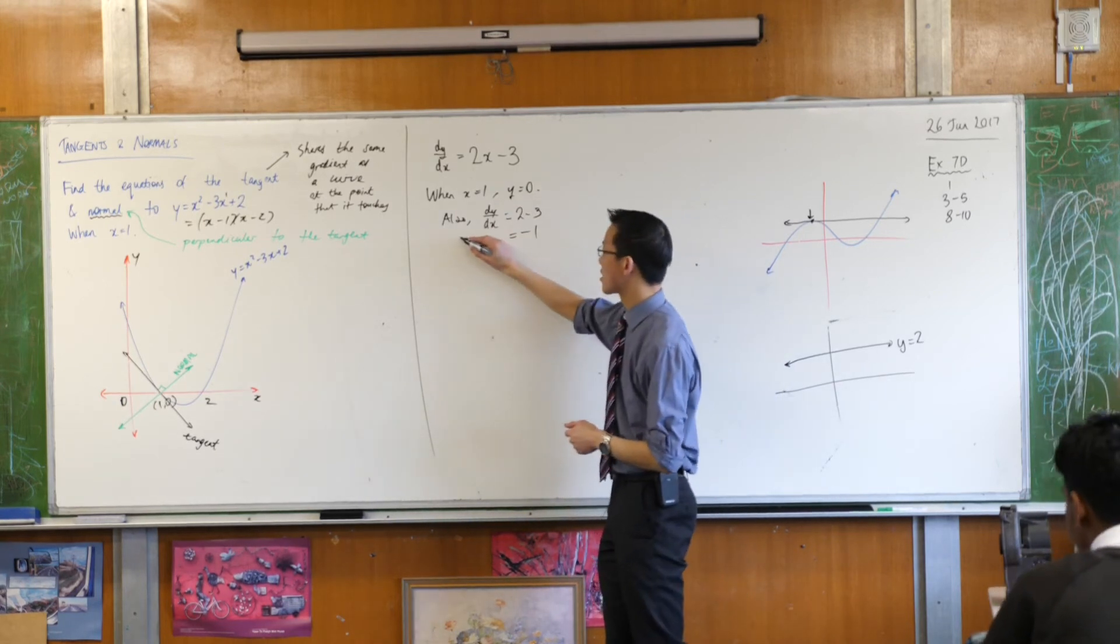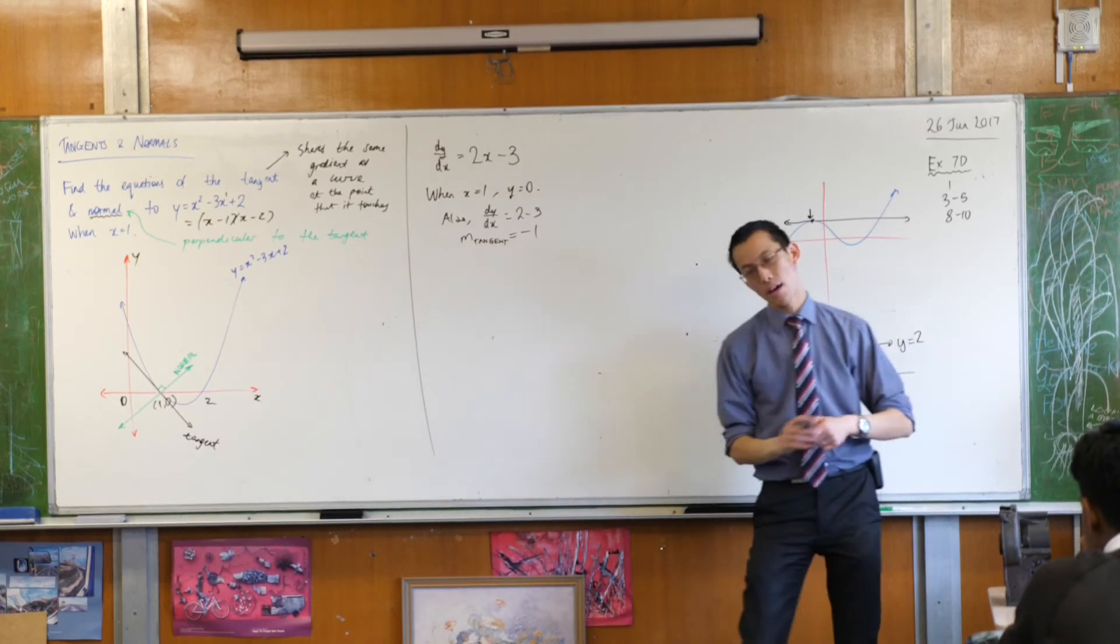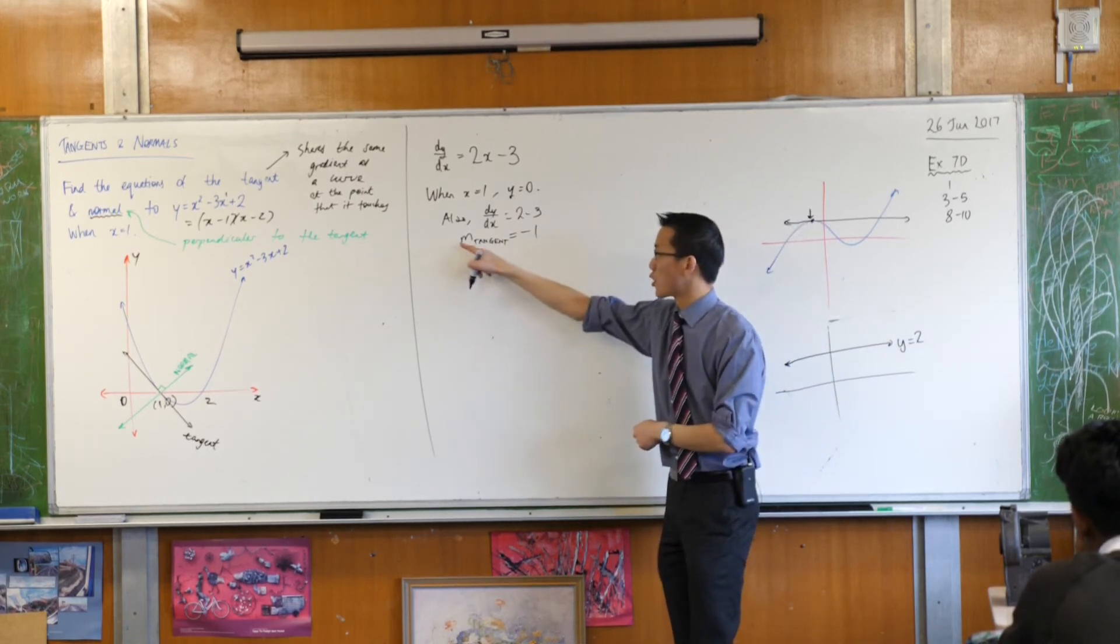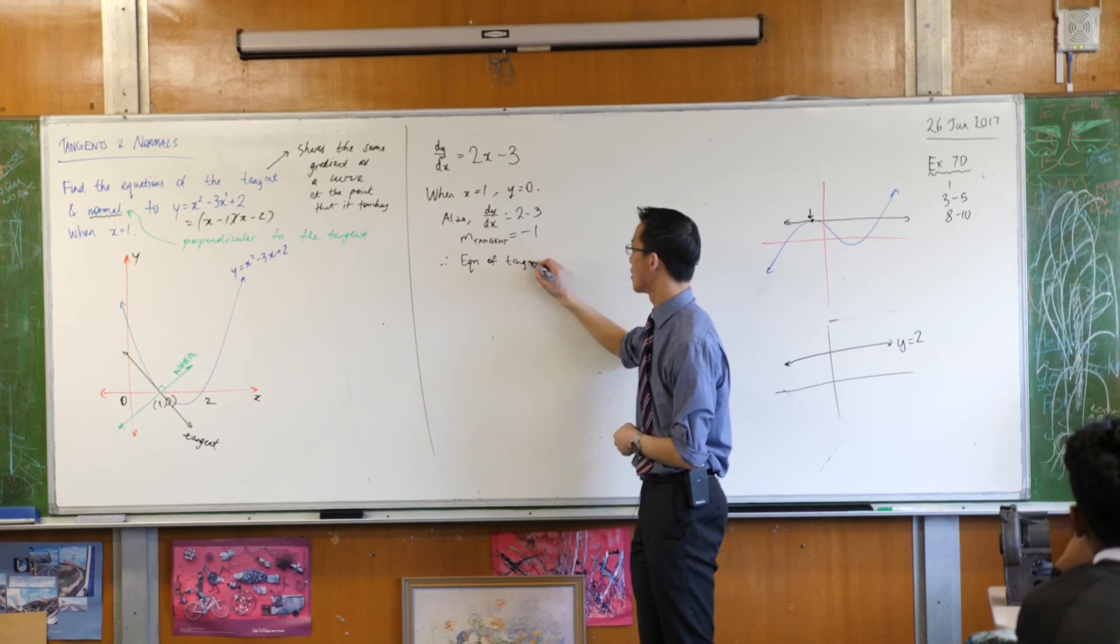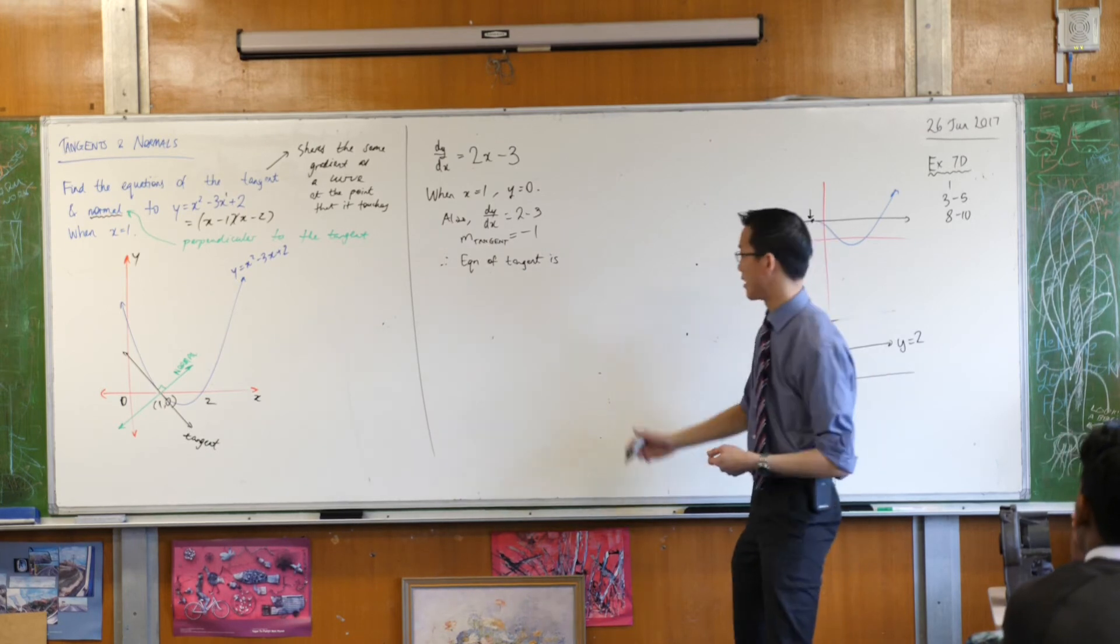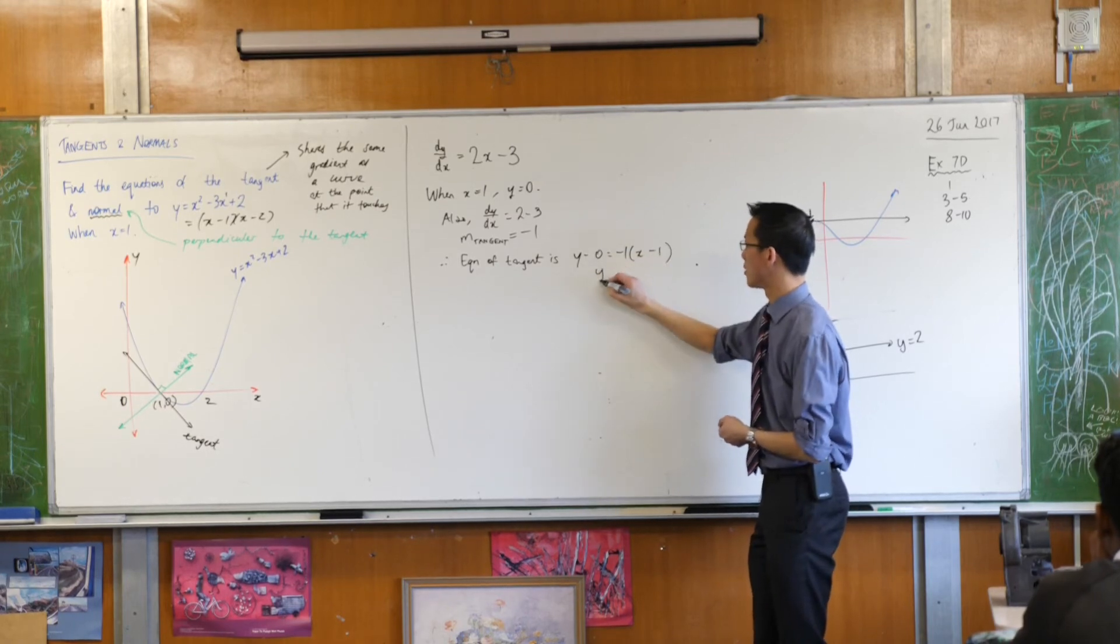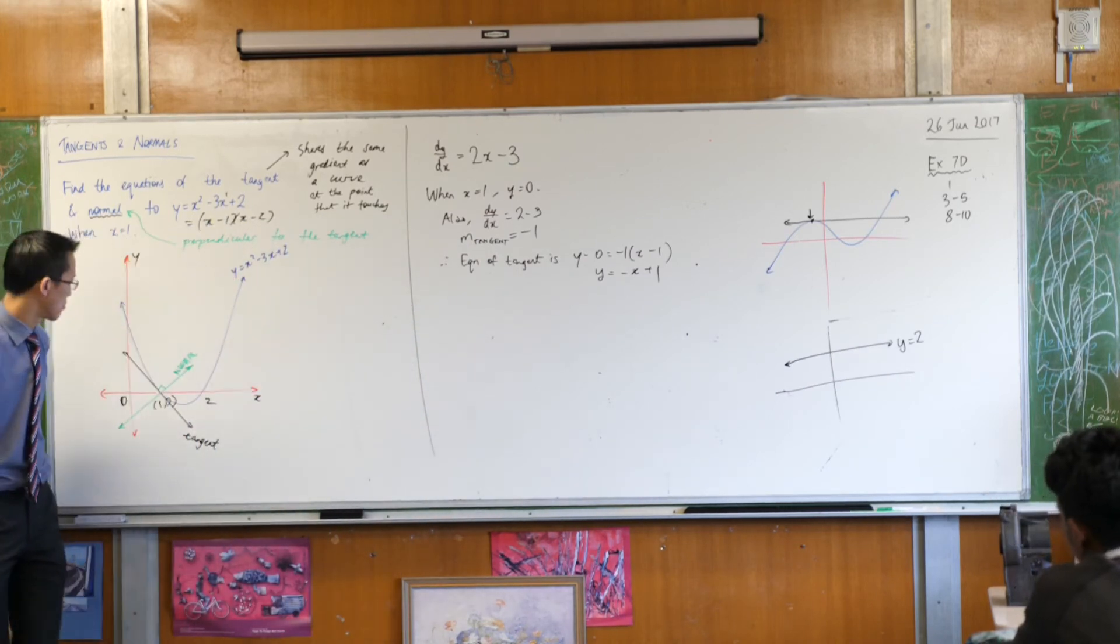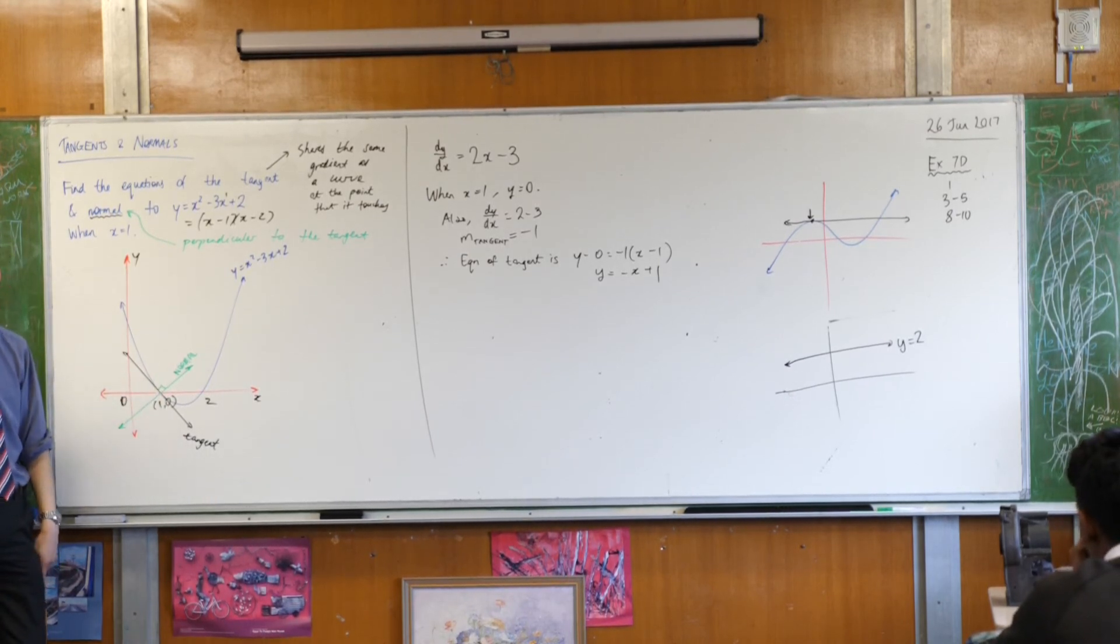So therefore, I'm going to say the gradient of the tangent. I'm not going to say m by itself, because I'm about to, in about three minutes, find out another gradient. So I'm going to label the gradient that I'm dealing with. The gradient of the tangent is that. So therefore, the equation of the tangent is, and then I'm going to launch into which form? Point gradient. Point gradient, because I've got a point, got a gradient. So y minus zero equals... Okay. What do you think? Are you happy? Not bad, considering I did a lot of that by hand. y equals minus x plus one looks pretty convincing to me. Okay?